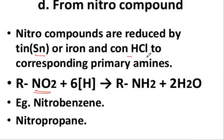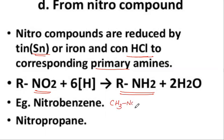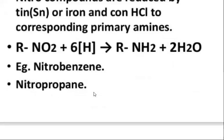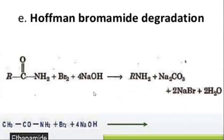Whenever an NO2 group undergoes reduction in the presence of tin and HCl, amines are produced. For example, methyl nitrobenzene (methyl nitrate compound), when treated with a reducing agent, produces the corresponding amine. By this method — reduction of nitro compounds with tin and HCl — we can produce amines.